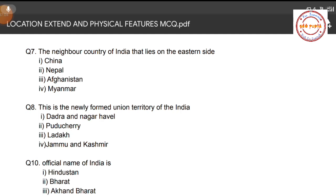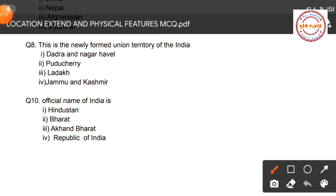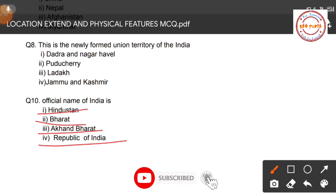Question number ten: What is the official name of India? Options are: Hindustan, Bharat, Akhand Bharat, and Republic of India. This one is left as homework — if you know the answer, write it in the comment section. That wraps up the 10 questions from this MCQ series. See you in Part 2 of the same chapter. Till then, take care.